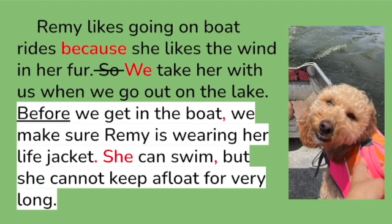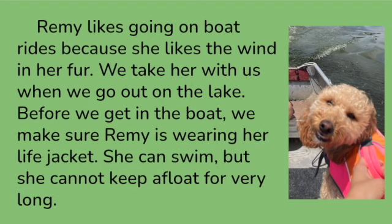'She can swim, but she cannot keep afloat for very long.' In this last sentence I have two independent clauses joined with a comma and a FANBOYS word. 'She can swim' is a complete simple sentence — subject 'she,' predicate 'can swim.' I've used the connector comma-but to combine my first independent clause 'she can swim' with my second independent clause 'she cannot keep afloat for very long.' This is the successful use of a comma and a FANBOYS word as a connector.